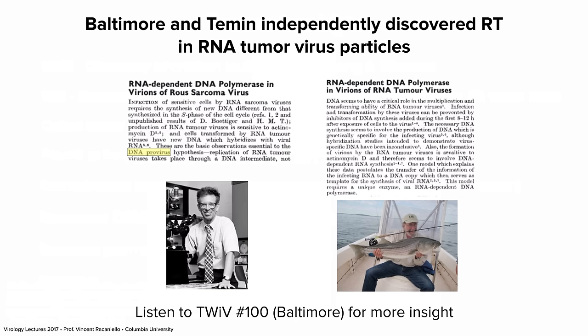Here's the article from Temin, with a lovely abstract where he says these are basic observations essential to the DNA provirus hypothesis: replication of RNA tumor viruses takes place through a DNA intermediate. And independently, David Baltimore also discovered RNA-dependent DNA polymerase in tumor virus particles. They both got Nobel Prizes a few years later for this discovery.